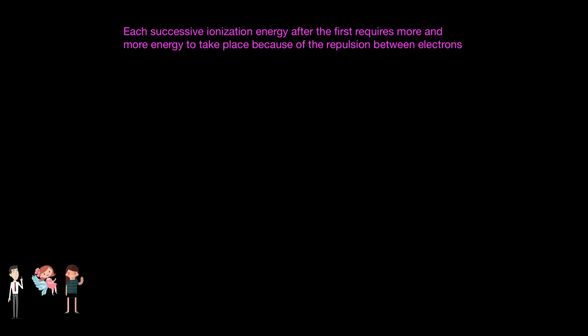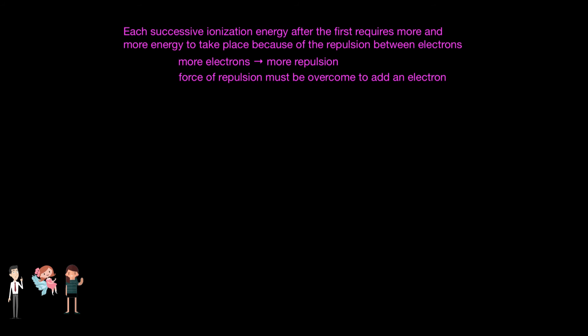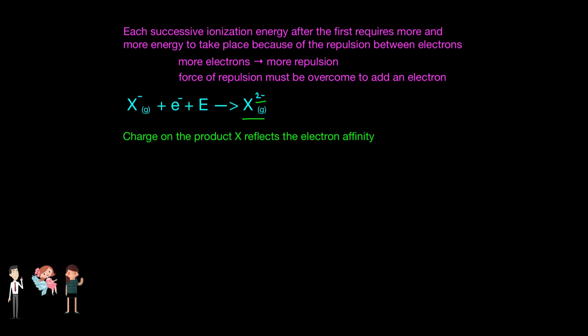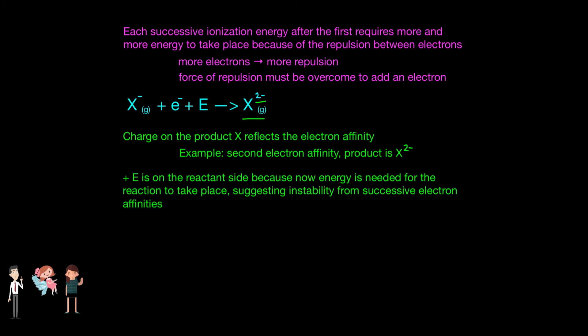The second electron affinity and everything beyond is like the first, but the difference is that the second and each successive electron affinity is endothermic, while the first is exothermic — meaning each successive electron affinity after the first requires more and more energy to take place, because of repulsion between the electrons. Since electrons have already been added, adding more electrons will result in even more repulsion. The second ionization is when we start to observe that the force of repulsion must be overcome to add an electron to the negatively charged ion. The second electron affinity can be expressed using an equation, keeping in mind that the charge on the product X is negative the number of electron affinity reactions that have taken place — so for the second, it is 2−. Also, E is now on the reactant side, because energy is needed for the reaction to take place instead of being released, suggesting the instability that occurs from successive electron affinities.